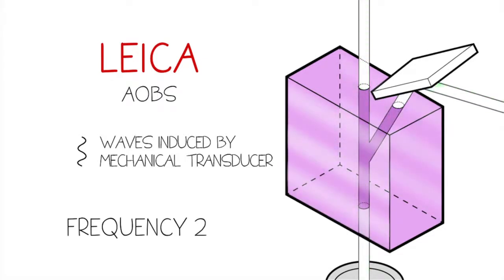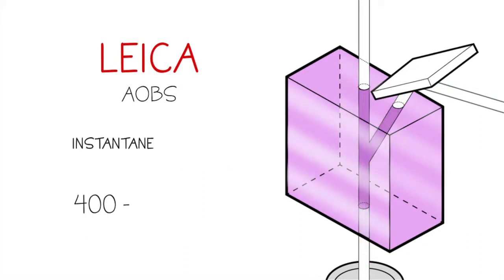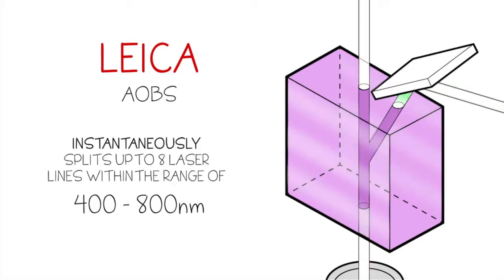As a result, the AOBS can instantly split up to eight laser lines within the range of 400 to 800 nanometers, making it the only beam splitter that complements the spectral output of the white light laser.